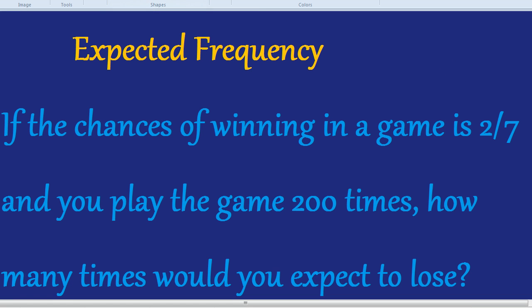Both probabilities have to add up to 1. So if the chances of us winning is 2 out of 7, and we can only win or lose, the chances of us losing must be 5 out of 7.